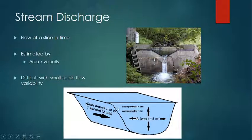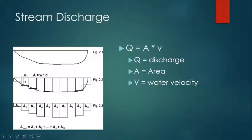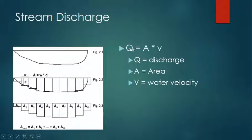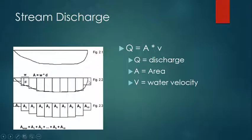That simplified approach assumes a straight pipe with uniform velocity. In a real stream, water flows slower at the sides than in the middle. So to calculate Q = area × velocity accurately, you break the stream channel into many sections, find the area of each section, and measure the water velocity at each section individually. You get a small discharge for each section, then sum them all up for total discharge.